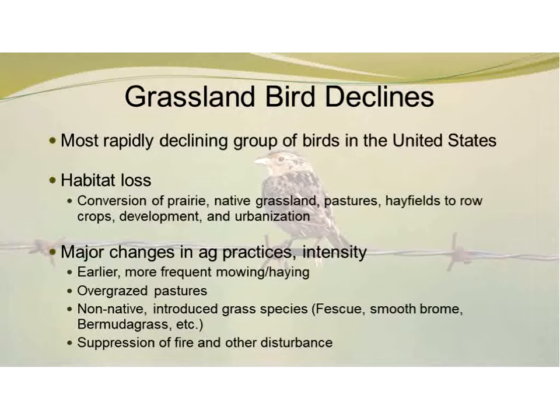Results from the North American Breeding Bird Survey suggest that 43% of grassland species and 36% of successional scrub species exhibited significant population decline since 1966, when the Breeding Bird Survey first began.